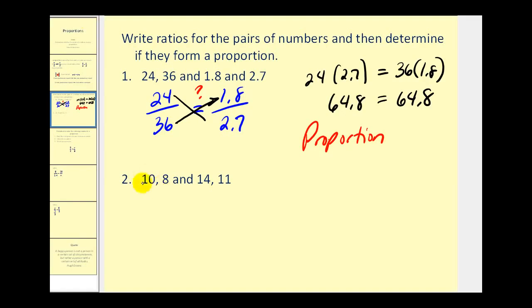For number two, the first ratio would be 10 to 8 and the second ratio would be 14 to 11. And we want to know if this would form a proportion. We can determine this by finding the cross products and seeing if they're equal.